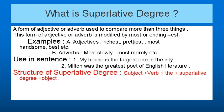What is superlative degree? Superlative degree is the form of adjective or adverb used to compare more than three things. This form of adjective or adverb is modified by 'most' or by adding the ending '-est'. In this type of degree change we use 'most' or '-est' with the adjective or adverb. For adjectives: richest, prettiest, or most handsome. For adverbs: most slowly, most merrily, etc.